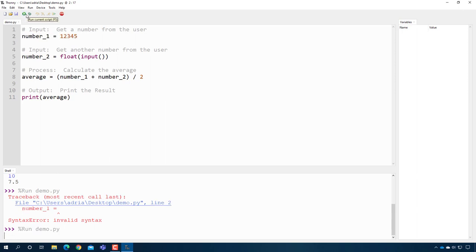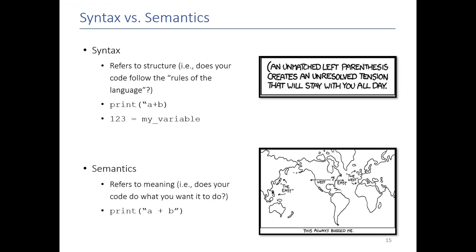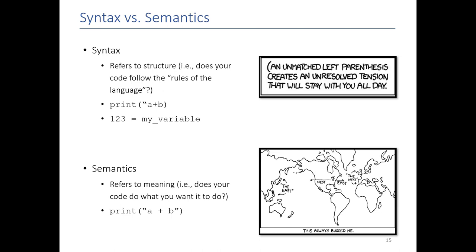If I do this, everything is fine, but now the program may not do what I wanted it to do. Now it's not getting two numbers from the user. It's only getting one. This is what we refer to as a semantic error. So now we're talking about the meaning. The code technically follows all the rules of the language, but does it do what you want it to do? So for example here, printing A plus B is perfectly legal in Python. It just may not do what you want it to do.